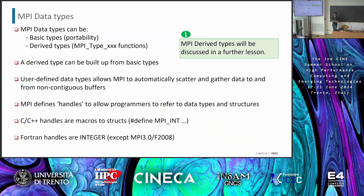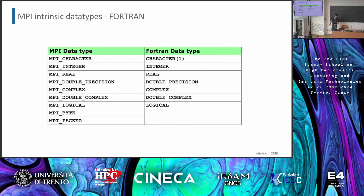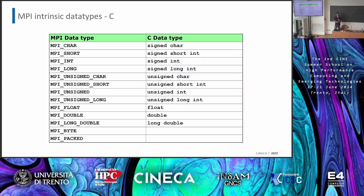MPI data types can be basic or derived — only basic types today, which are defined in the standard. MPI data types are standard data types with an additional handler, so they have a slightly different syntax. We don't write 'integer' or 'int', but something like MPI_INT. There are tables for that — for Fortran: MPI_CHARACTER, MPI_INTEGER, and so on. For C, there are also MPI_BYTE and MPI_PACKED if you want to send a particular amount of bytes without caring about data type, but that's not recommended. The same table exists for C — just imagine your standard data type and add MPI_ prefix, written all uppercase in C.